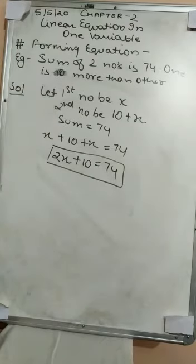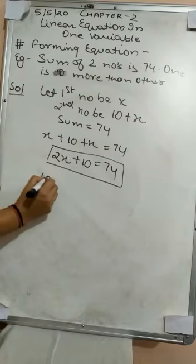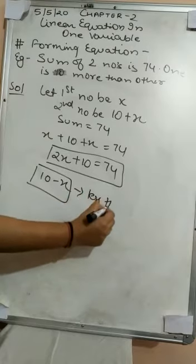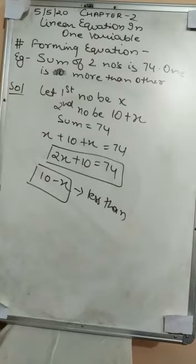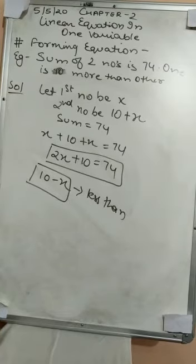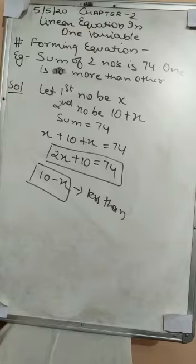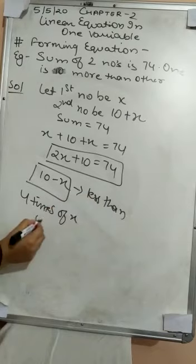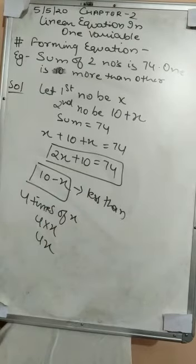If 'less than' is given, the meaning of 'less than' is subtract. If it is given as 'less than', we write it as 10 minus x. Whenever the word 'times' is used, it means we have to multiply. If they say 4 times of x, that means 4 into x, which is 4x. This is how we form an equation.